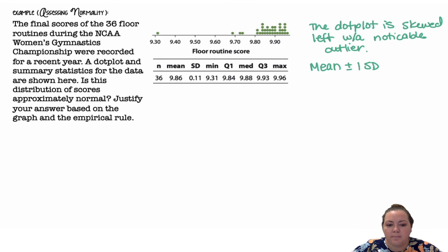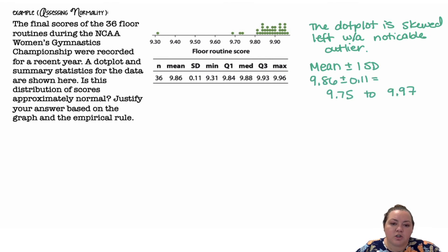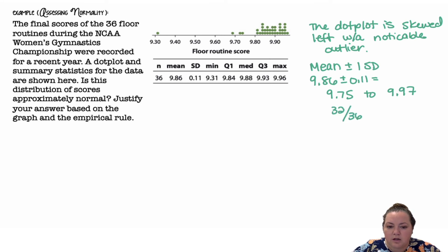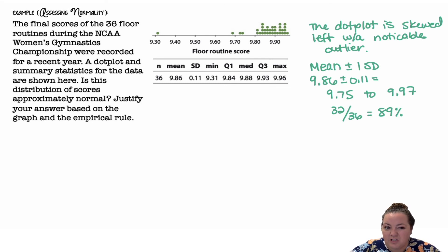Taking the mean of 9.86 plus one standard deviation of 0.11, and the mean minus one standard deviation, I get 9.75 and 9.97. Counting the dots on the dot plot, I have 32 out of 36 dots that fall into that window of 9.75 to 9.97, which is 89%, and that is not very close to 68%.